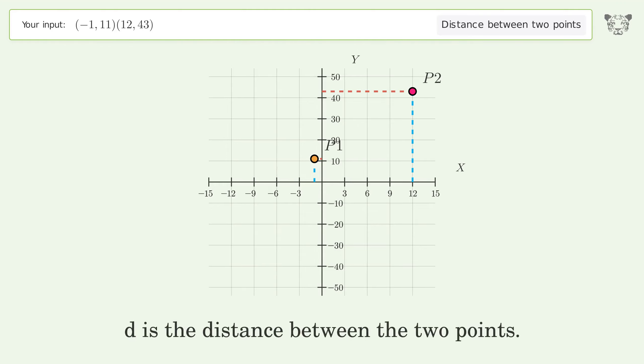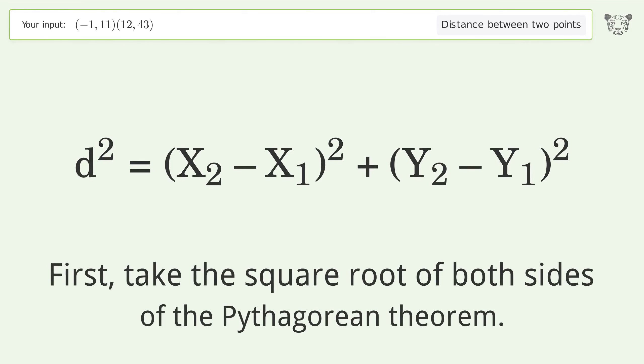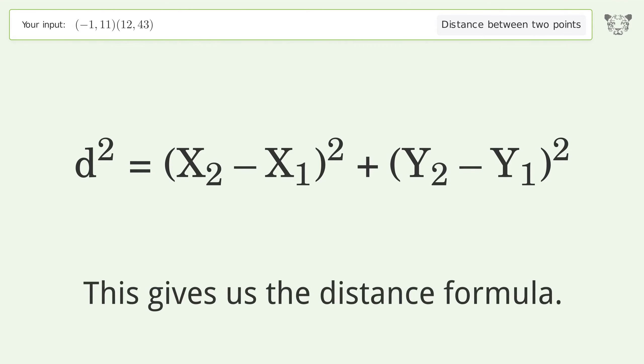d is the distance between the two points. First, take the square root of both sides of the Pythagorean theorem. This gives us the distance formula.